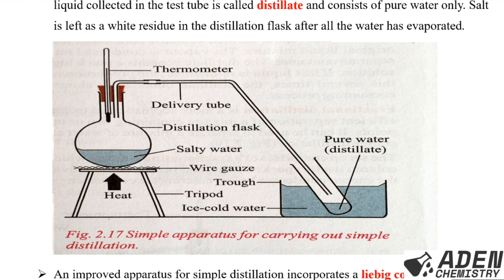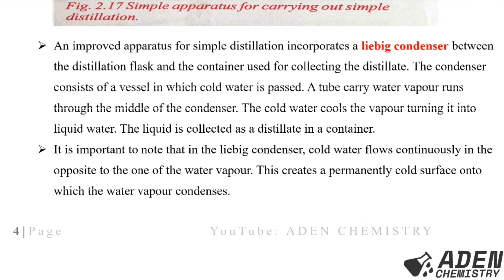The diagram for simple distillation shows salt water in a round-bottomed flask being heated so that water evaporates into water vapor. When the vapor reaches the tube surrounded by ice-cooled water, it condenses into liquid water. The liquid collected is known as the distillate and is mainly pure water. An improved apparatus incorporates a Liebig condenser between the distillation flask and the container used for collecting the distillate.